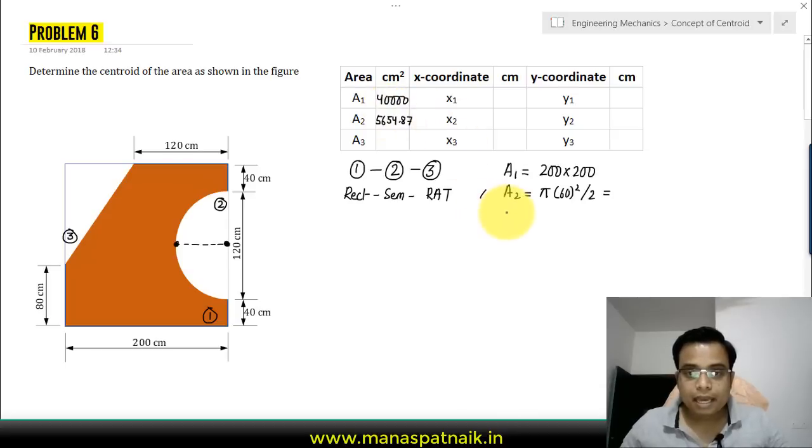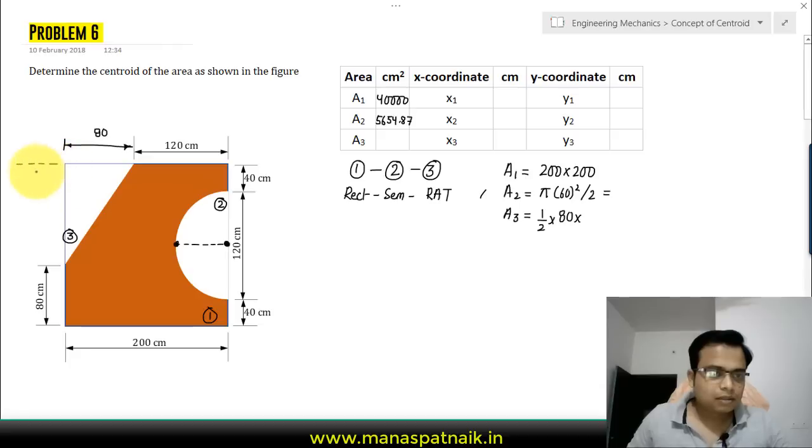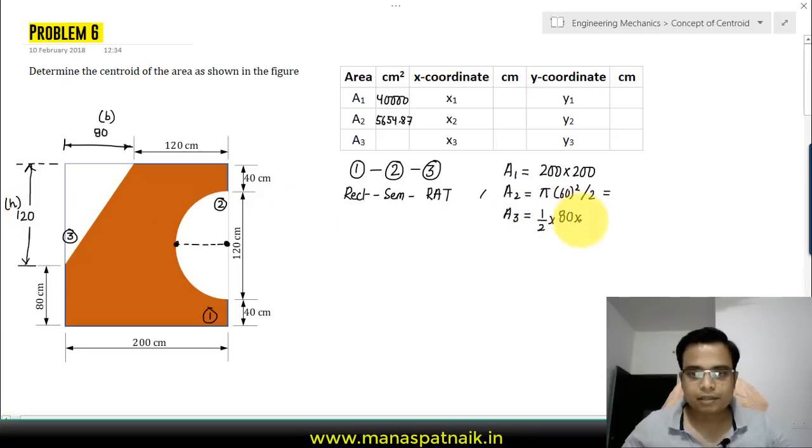Next we have the area of the triangle. Area of the triangle is half of base into height. The base is 200 minus 120, that's 80. The height is 120. So this multiplication finally works out as 4800 centimeter square.